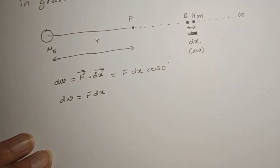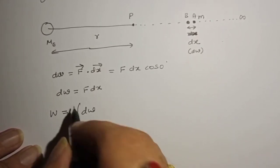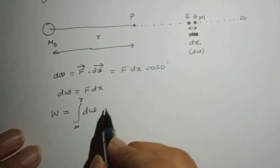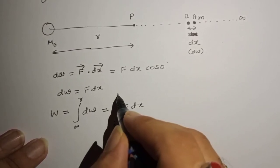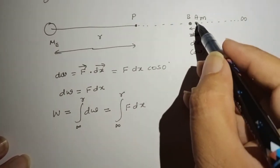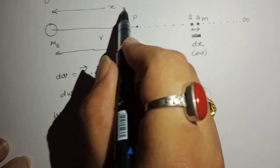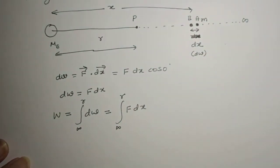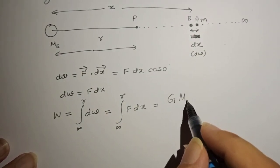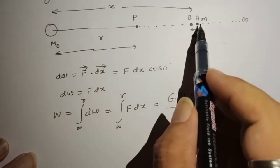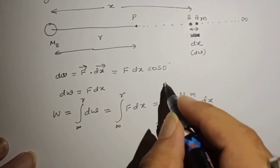To calculate total work done, the total work required is equal to the integration of dW between the limits infinity and r, because I should displace the particle from infinity to r. That equals the integration of F dx between the limits infinity and r. When the mass is at point A, let the distance between the earth and that point be x. So the force equals G times M_e times m divided by x squared, integrated with dx between the limits infinity and r.